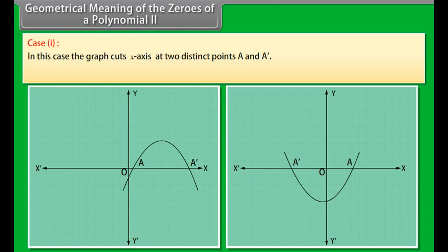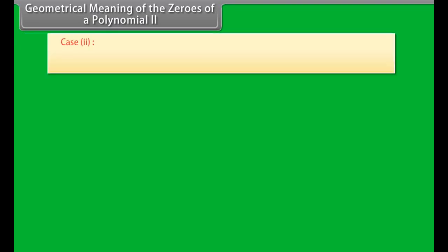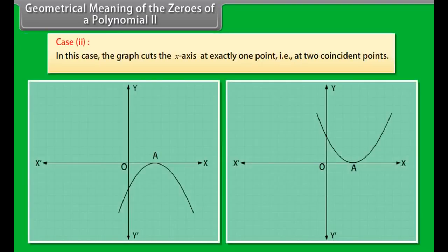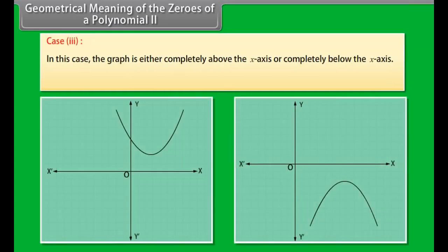The shape of the graph of y = ax² + bx + c can have three cases. Case 1: the graph cuts the x-axis at two distinct points A and A'. The two zeros of the quadratic polynomial ax² + bx + c are the x-coordinates of A and A'.